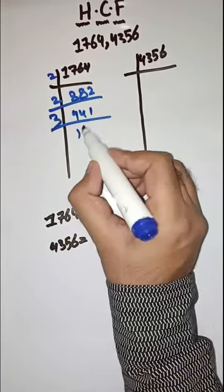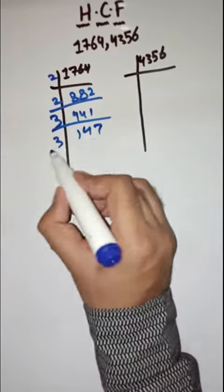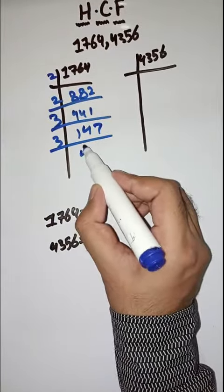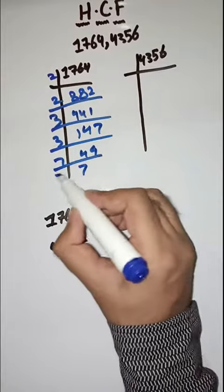Now with 3, dividing by 3: 147, then 49. Then with 7, dividing again with 7 until we reach 1.